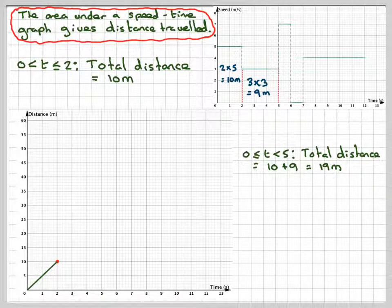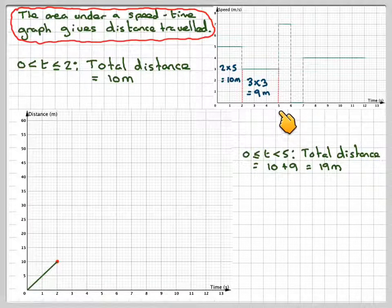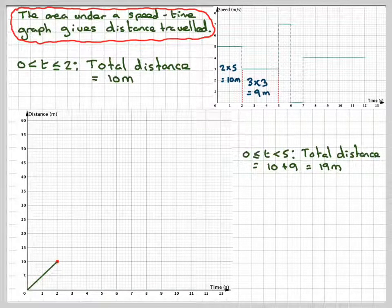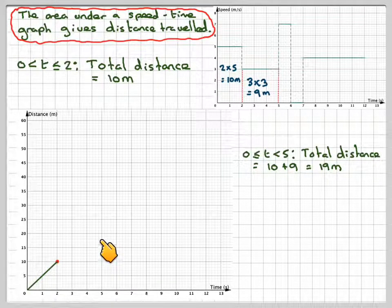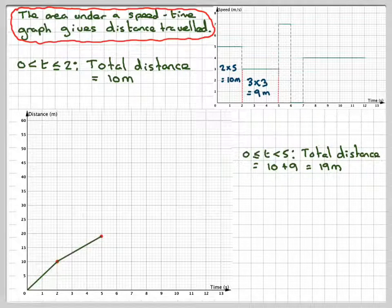Therefore, at t=5, we need to go up to 19. So put a dot there and join it up with a straight line.